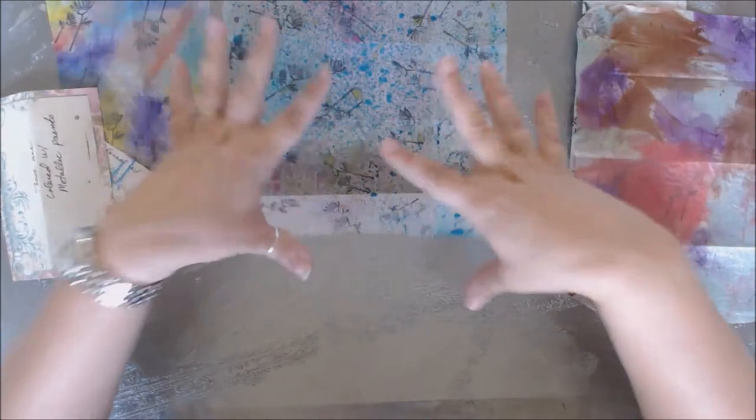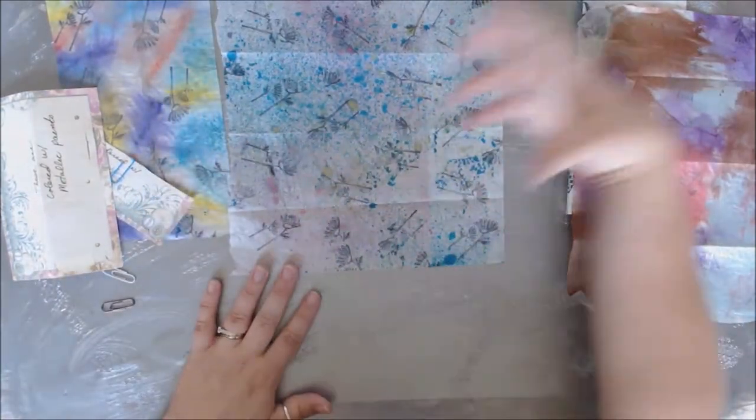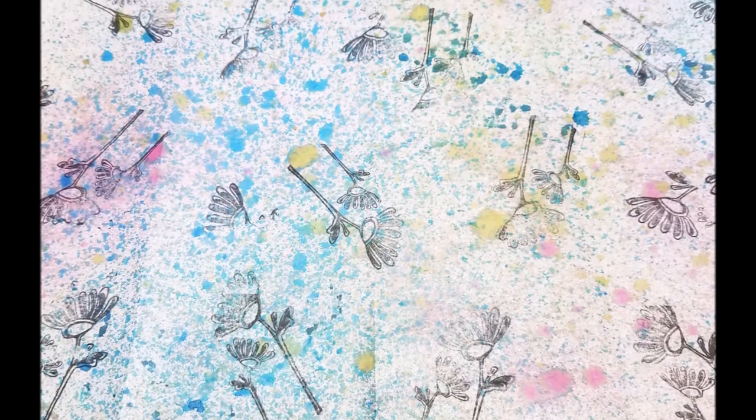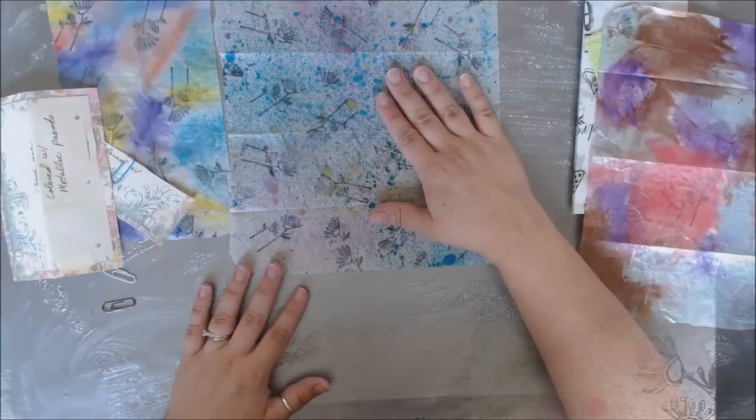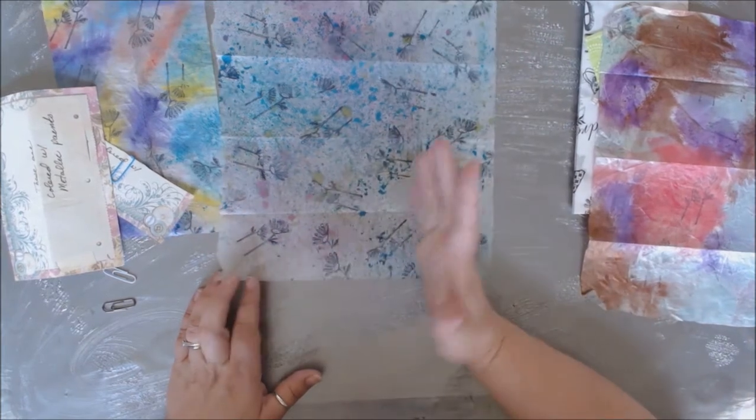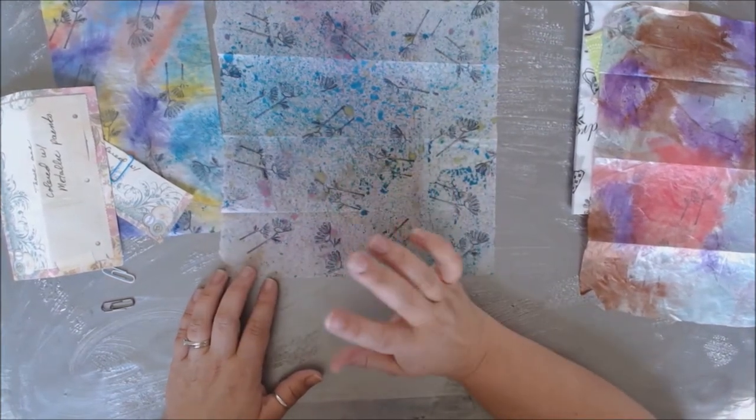Then this really whole kind of splotchy spray dots, just sporadic, haphazard, and it's really gorgeous. I love the colors that she's picked, some really beautiful color combinations. That's absolutely gorgeous with the same flower. It's a fun way to use up some tissue paper.